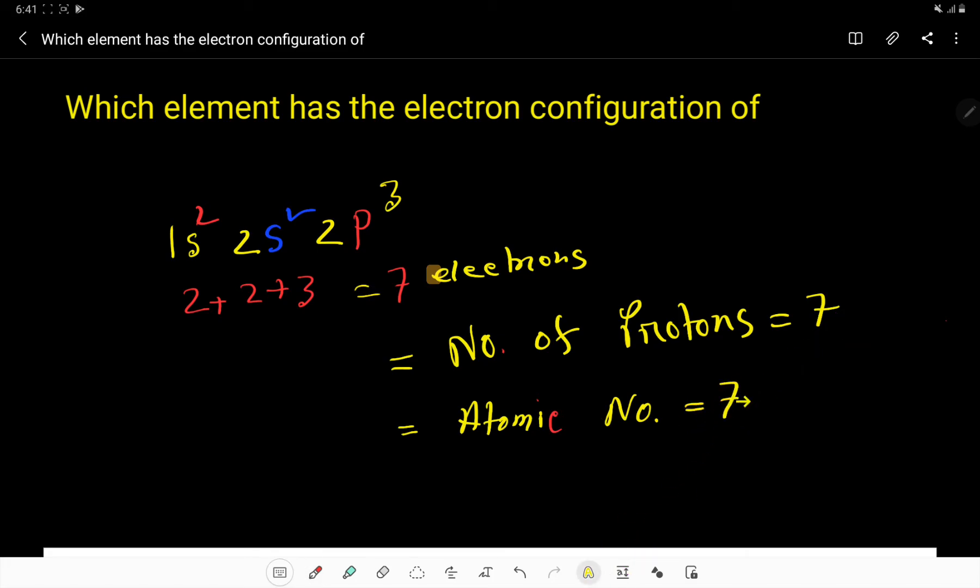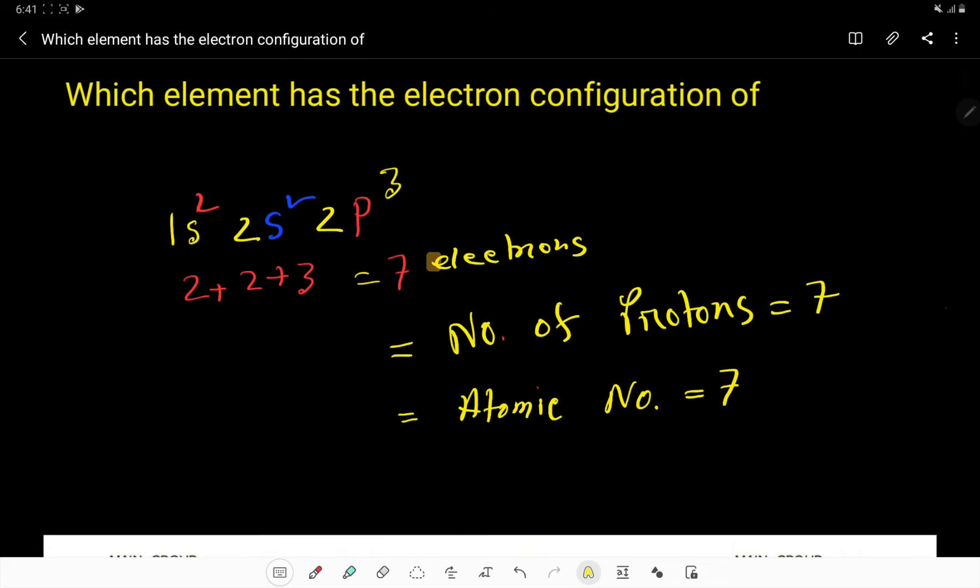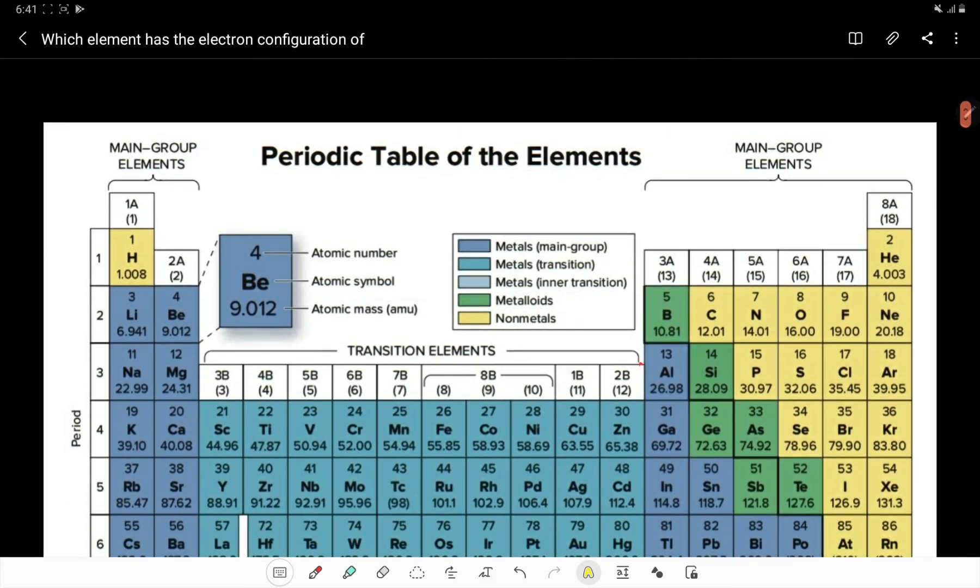Now we have to look for the element whose atomic number is 7 from the periodic table. Atomic number 7 is nitrogen. Nitrogen is an element of group 15 or 5; it is a main group element.